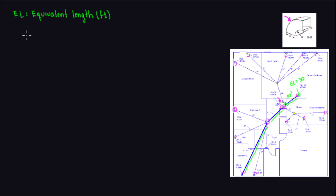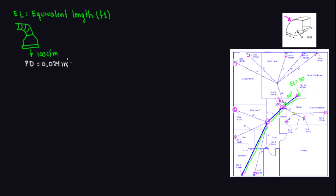Let's look at an example. If I have a boot here — a boot for a supply register — we have, say, 100 CFM going to that supply register, and I have a flex duct connection. Whenever we have this configuration, we're going to have a pressure drop. For example, what if my pressure drop is 0.024 inches of water gauge, which is 2.4 inches of water gauge per 100 feet?